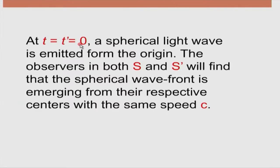At t = t prime = 0, the origins of both frames coincide, and a spherical light wave is emitted from the origin. It does not matter where the light source is fixed — whether at the origin of S, S prime, or neither — the only thing is that when the two origins were coincident, a light source emitted light from that point. Unlike classical mechanics, for light we need not specify where the observer is, because irrespective of which frame the light is emitted from, the speed of light is c in all inertial frames and in all directions.